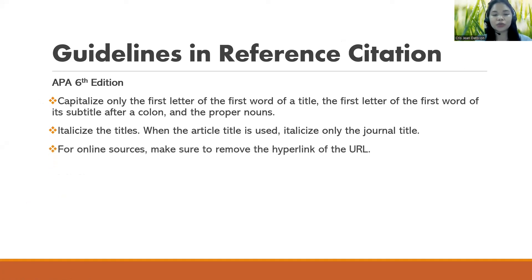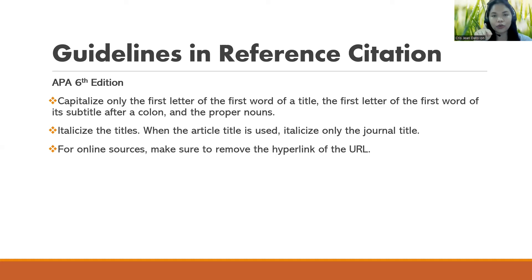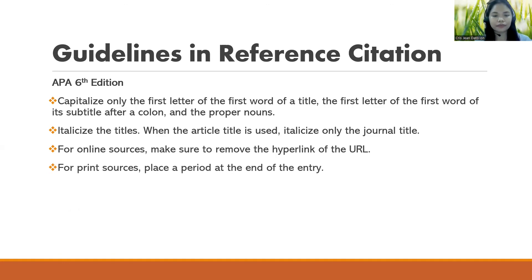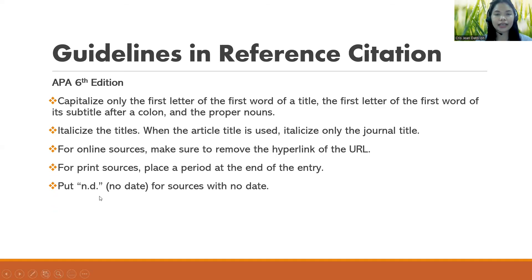For online sources, make sure to remove the hyperlink from the URL. If the URL appears blue and underlined, highlight it, change the text color to black, then click the underline button to remove the underline. For print sources, place a period at the end of the entry. For sources with no date, write 'n.d.' in place of the year. If you can identify from the source that there is no date, you can still use that source.